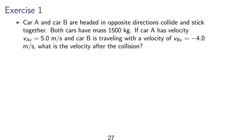Exercise 1. Consider car A and car B which are headed in opposite directions. They collide and stick together. Both cars have a mass of 1,500 kg. If car A has a velocity of Vax equals 5 m per second, car B is driving with velocity of Vbx equals negative 4 m per second, what is the velocity after the collision?